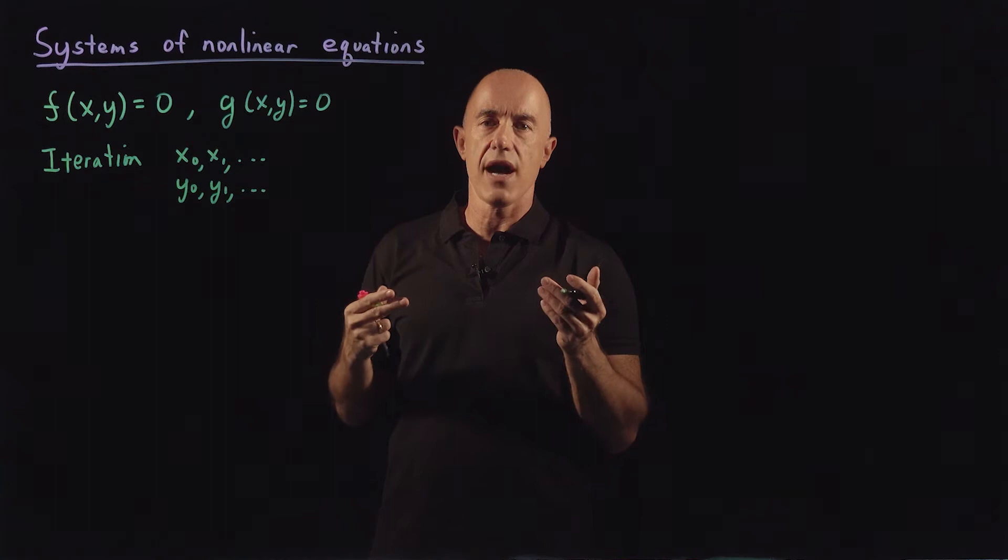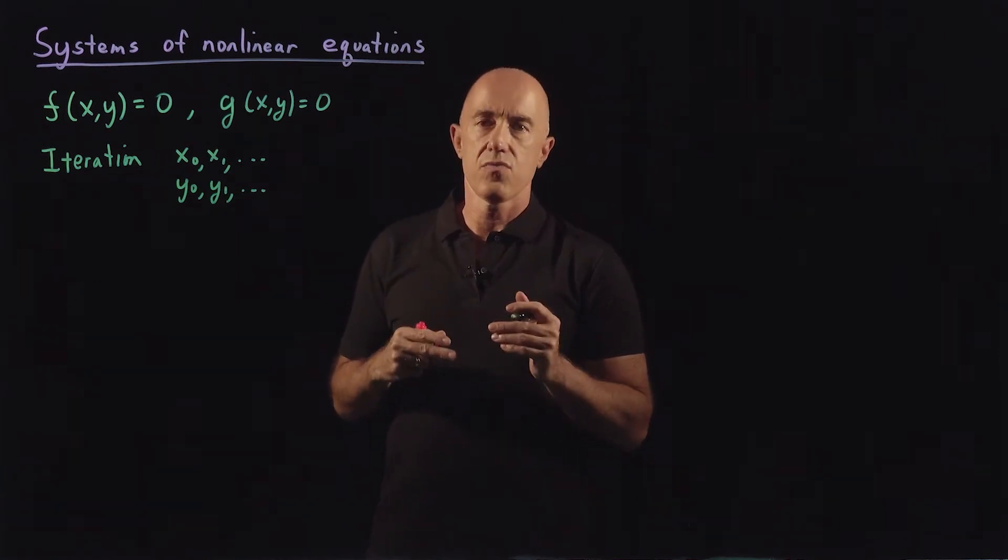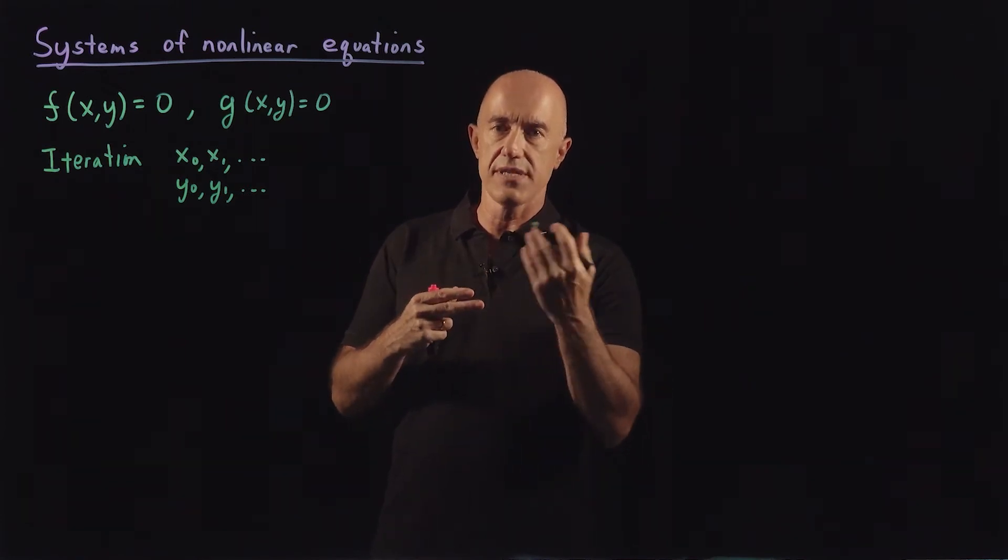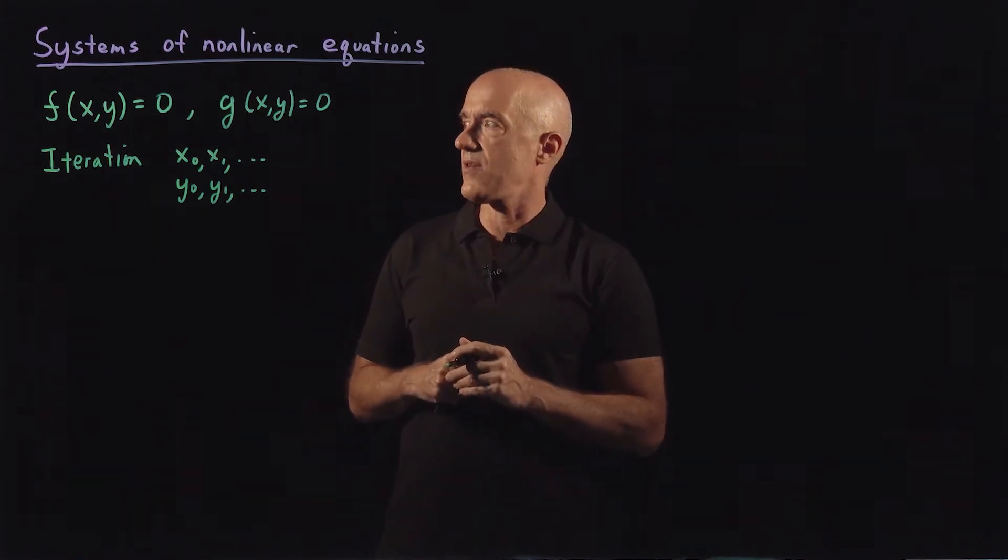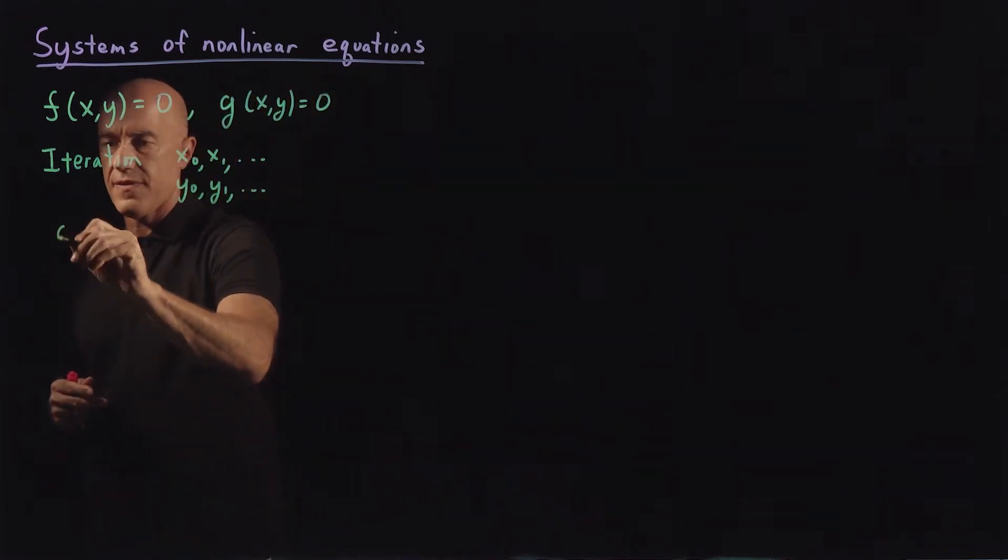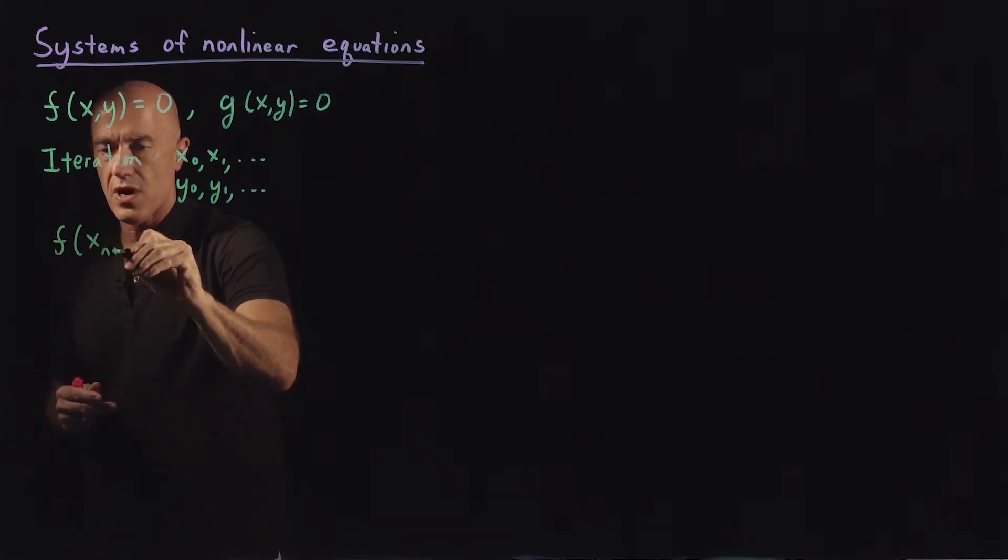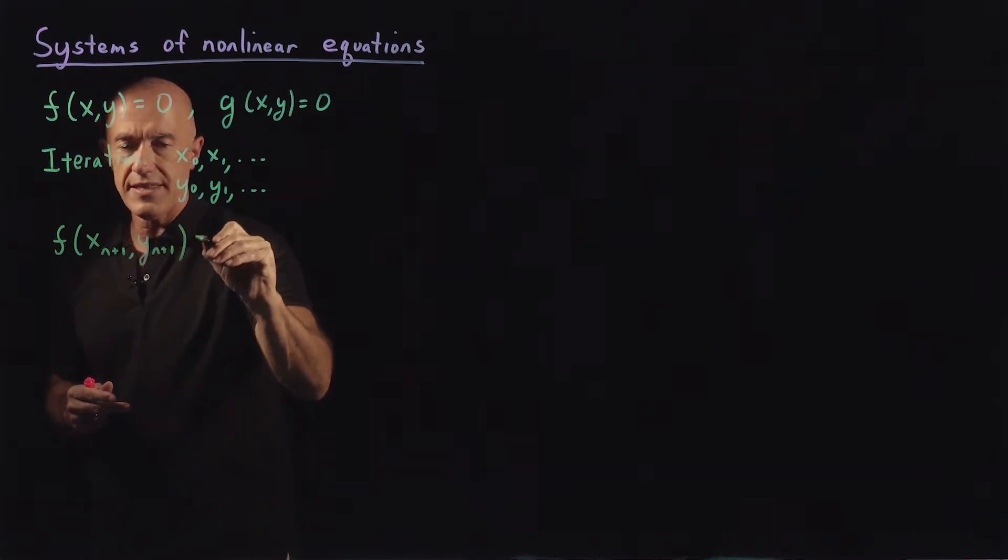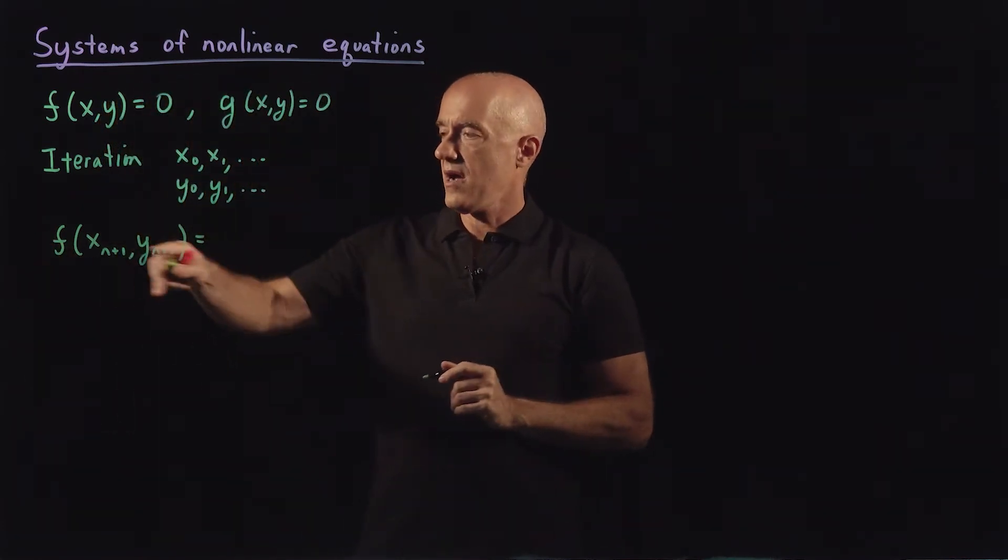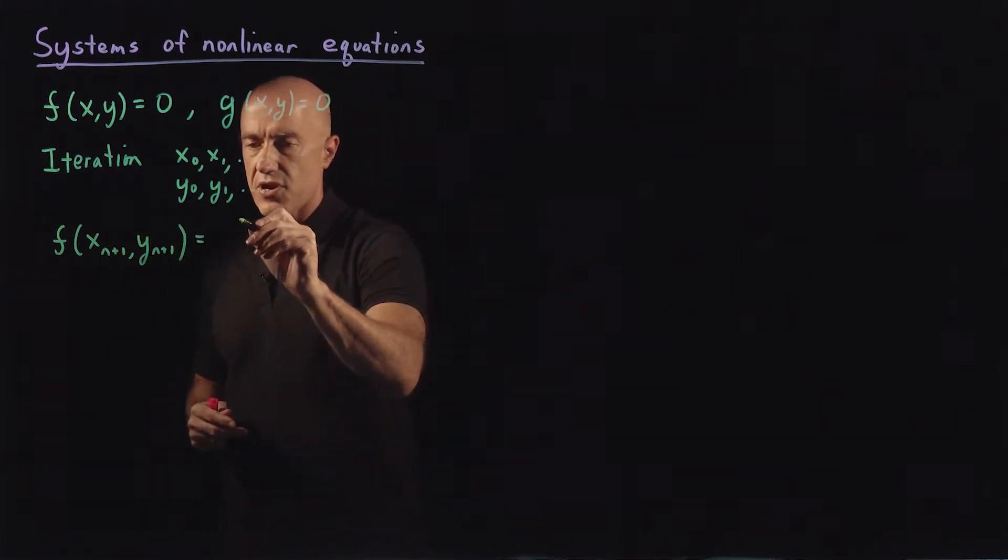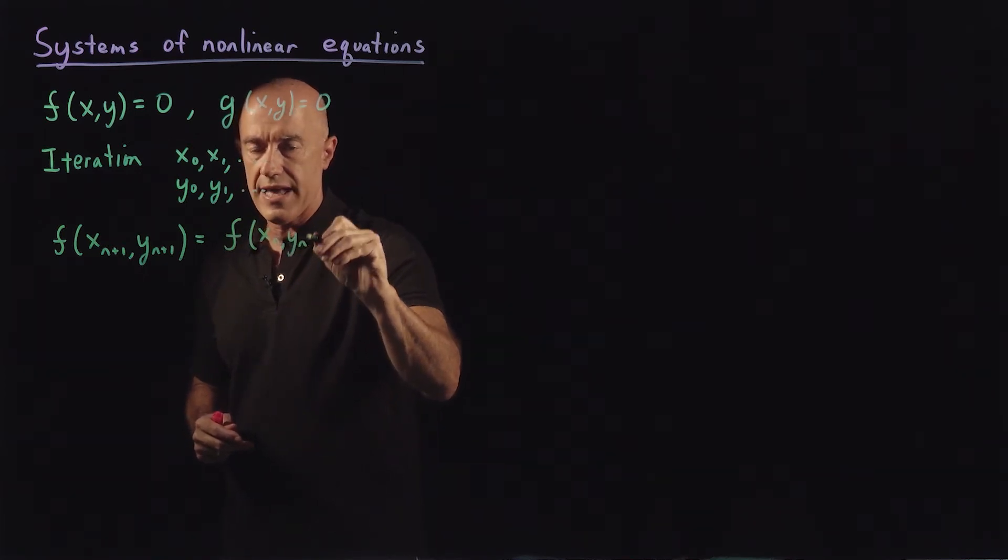How do we derive Newton's method for this? We can use Taylor series expansions. So let's say we did n iterations and we're on the n plus 1 iteration. We can write f of x sub n plus 1, y sub n plus 1, and Taylor series expand this function about x sub n and y sub n. So the first term in the Taylor series will be f of x sub n, y sub n.